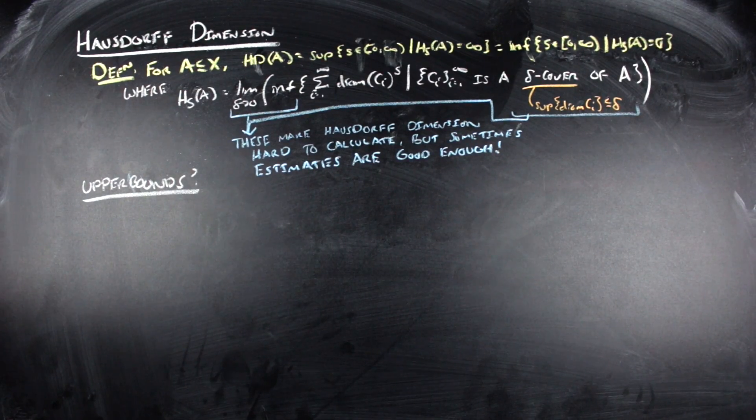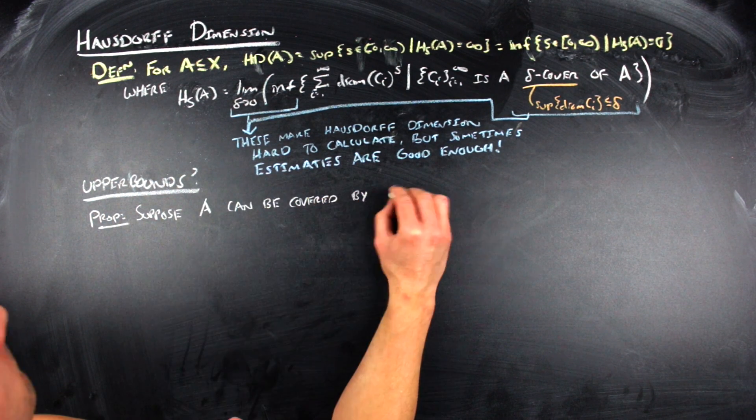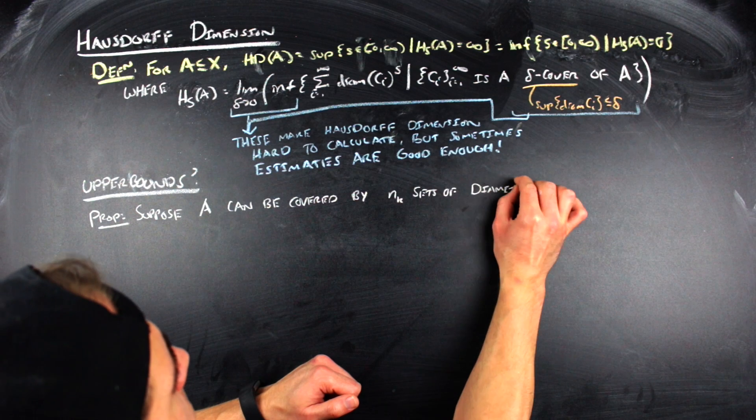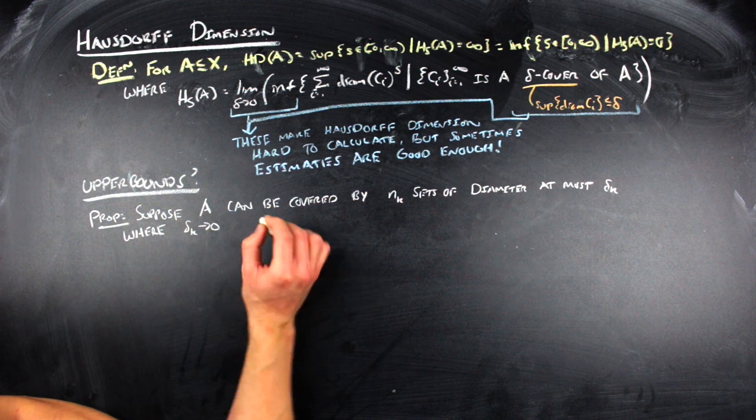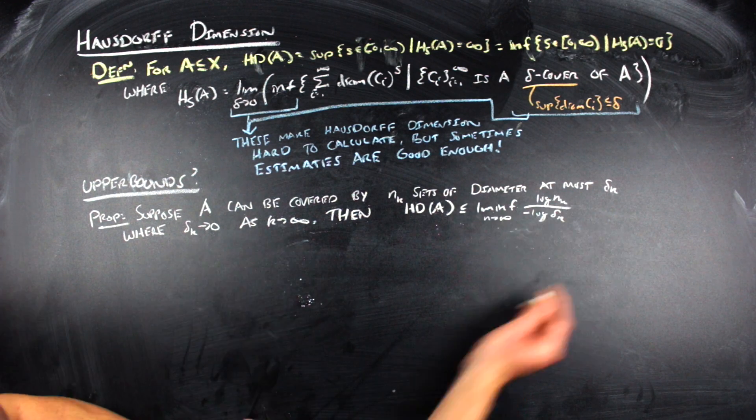The first place to start is to work with upper bounds. This is probably the easier thing to work with when doing estimates, because the following proposition just uses the fact that you're covering with finitely many things. Suppose A can be covered with n sub k sets of diameter at most delta sub k, where delta sub k goes to zero as k goes to infinity. Then the Hausdorff dimension is less than or equal to the limit inferior as k goes to infinity of log n sub k over negative log delta sub k.